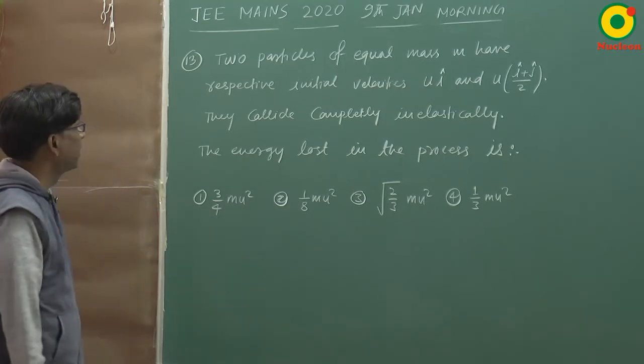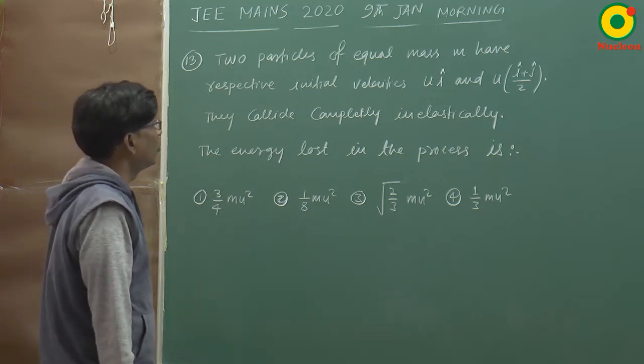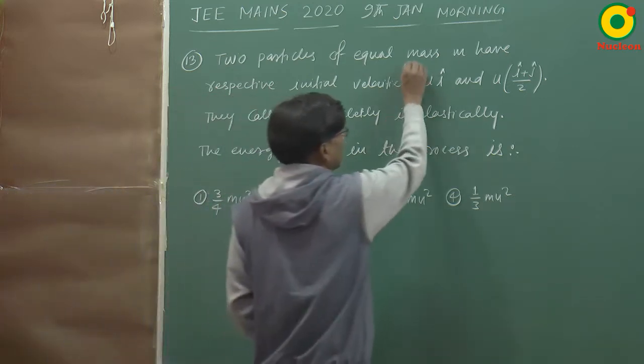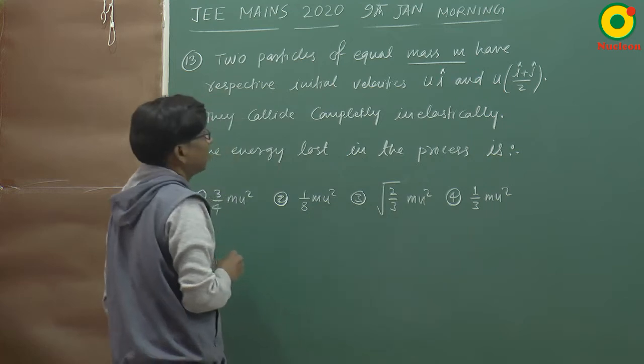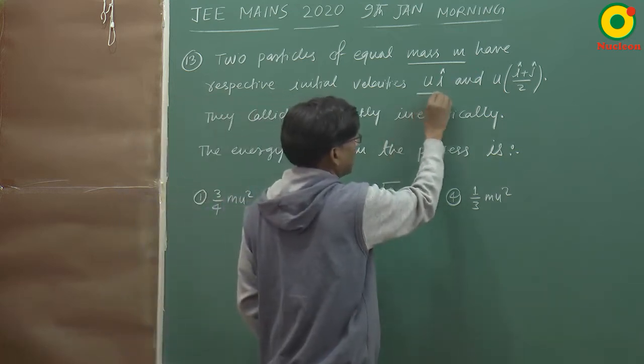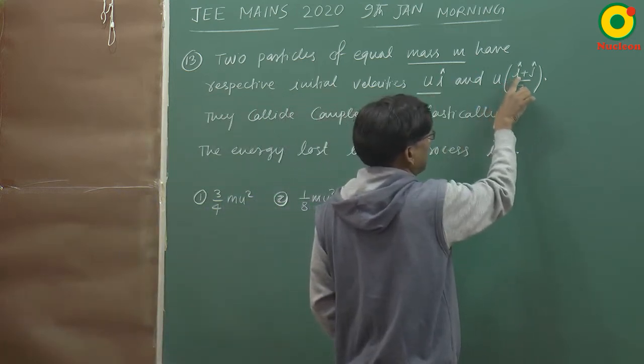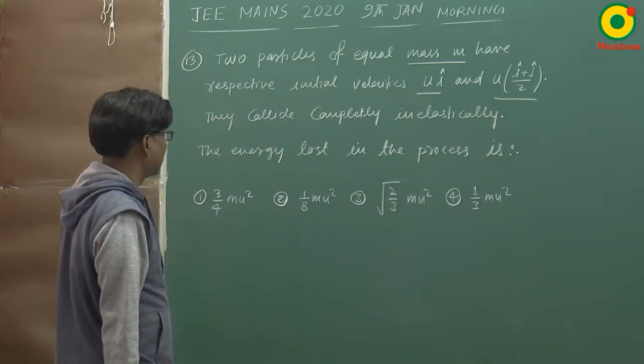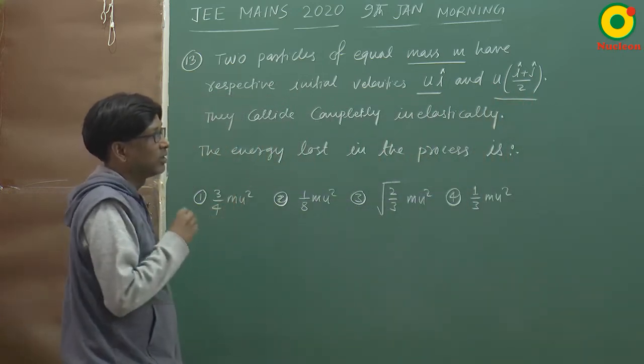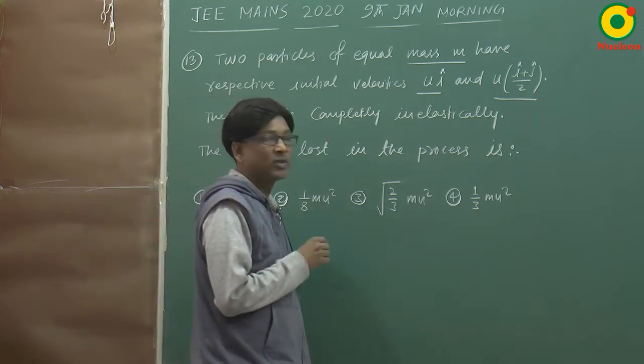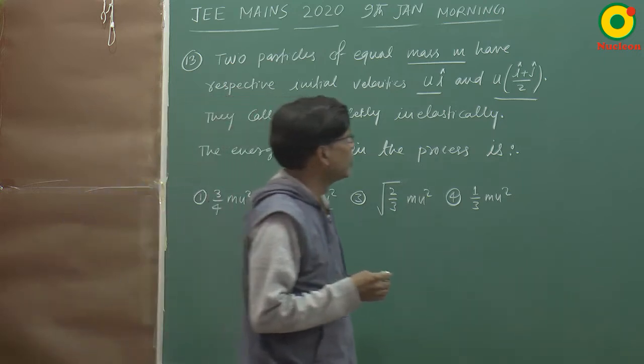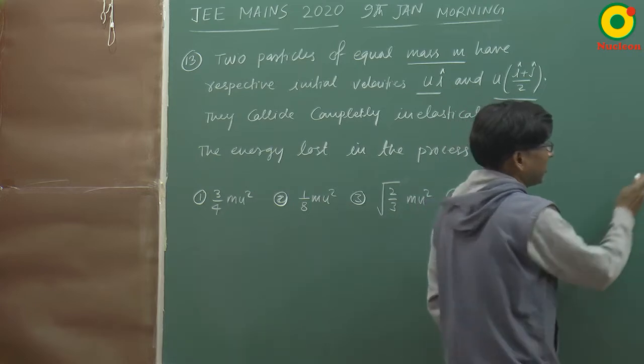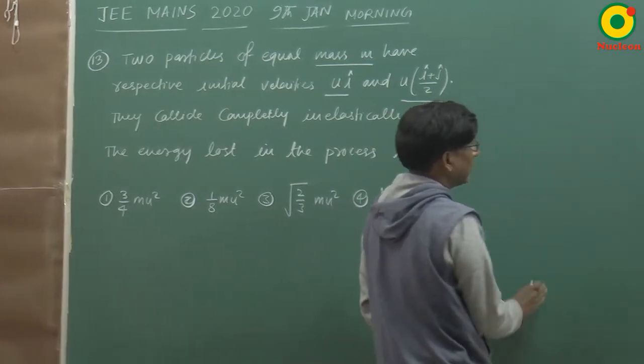Next question: two particles of equal mass m have respective initial velocities u i cap and u(i cap plus j cap)/2. They collide completely inelastically. The energy lost in the process - since it's an inelastic collision, energy will be lost. So what we'll do is apply momentum conservation, which can still be applied.